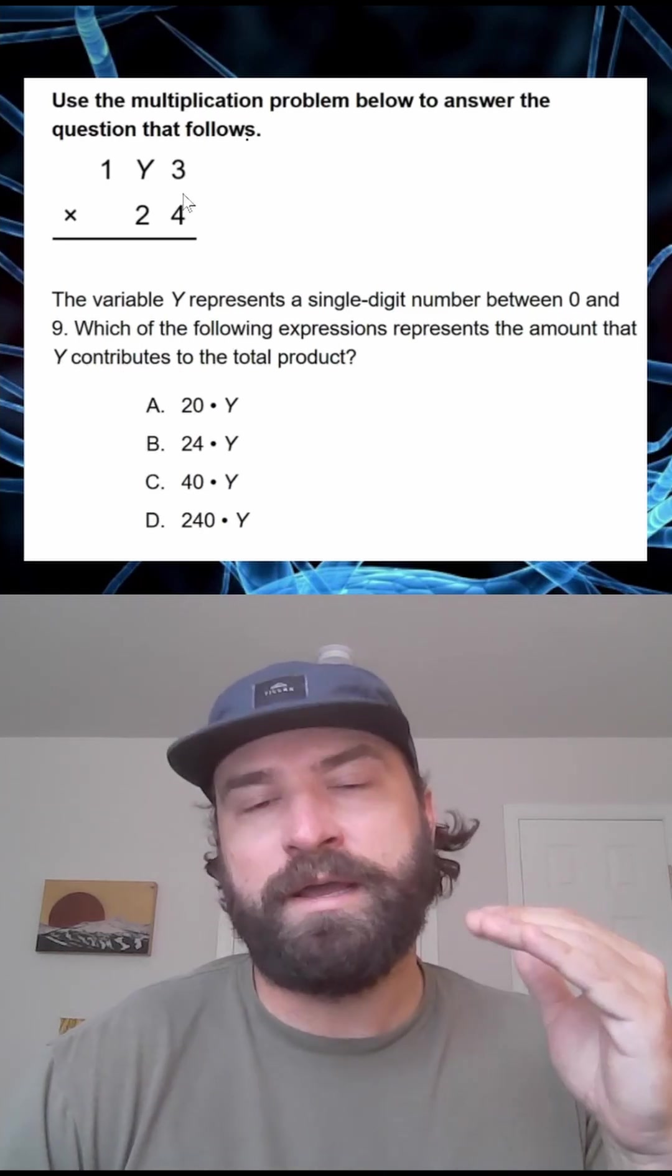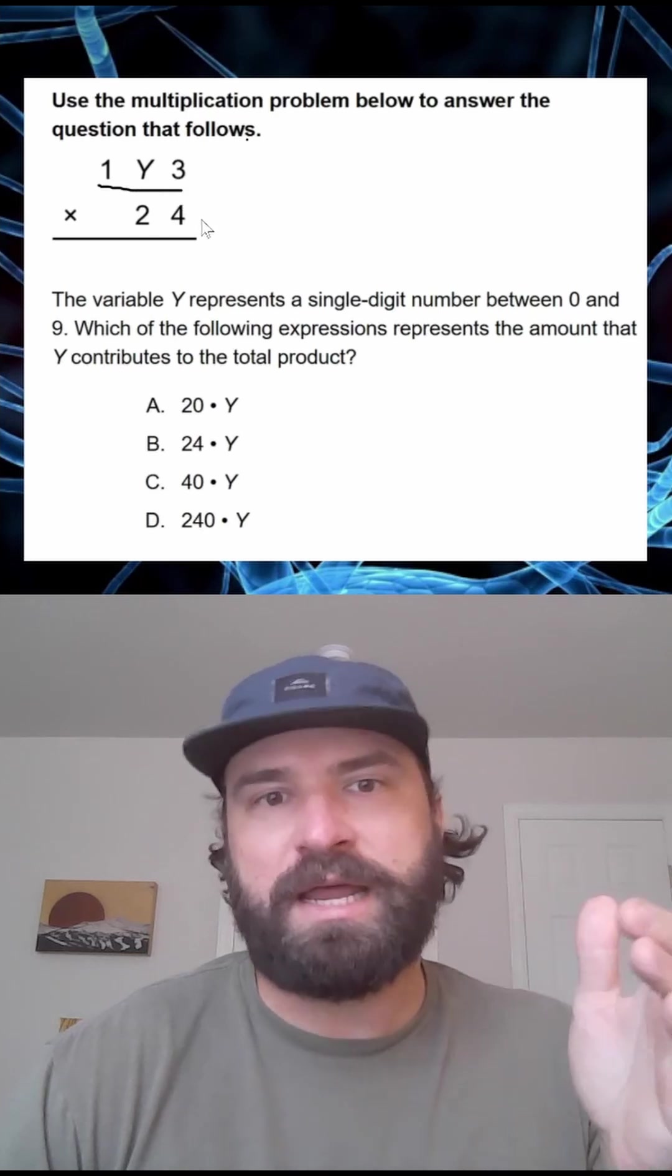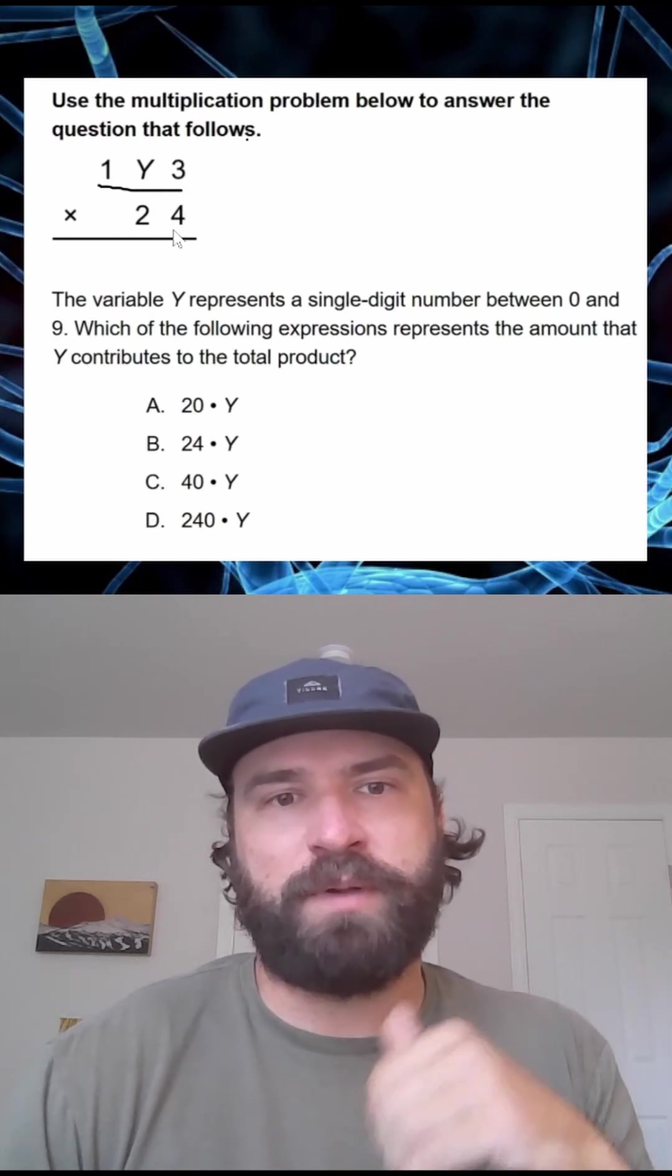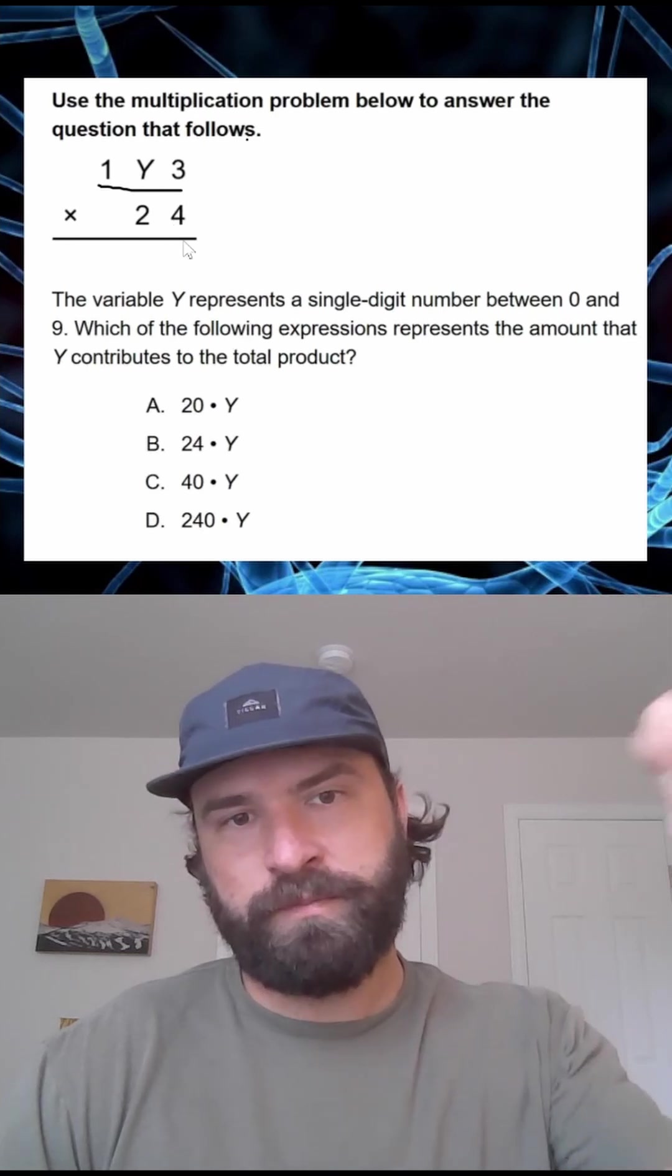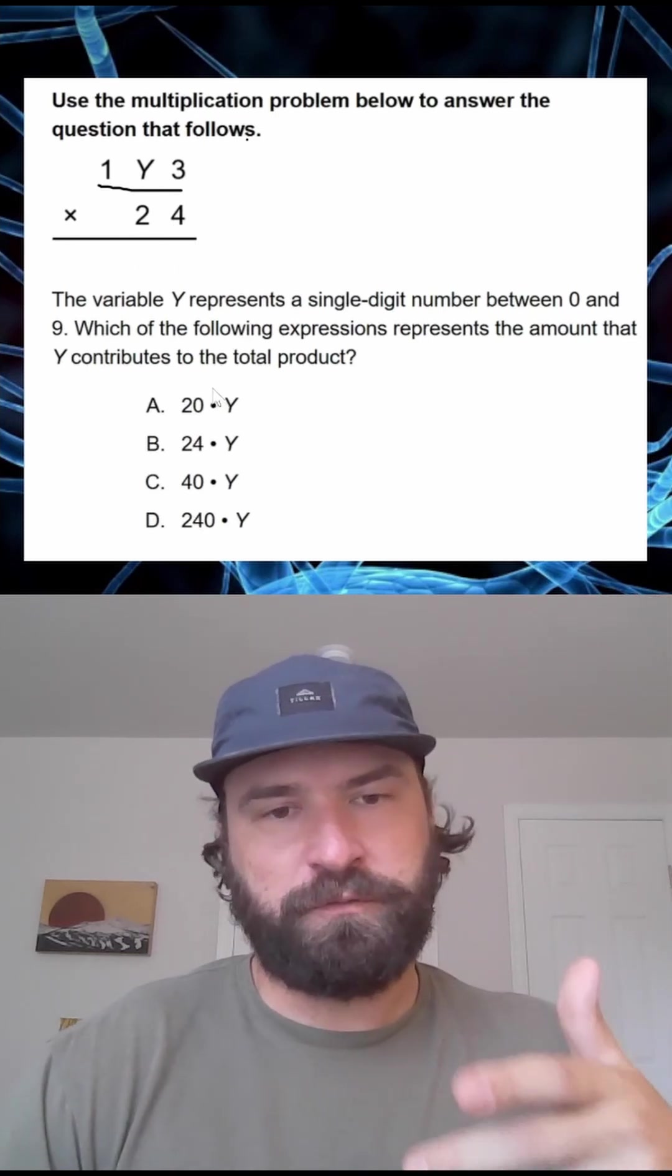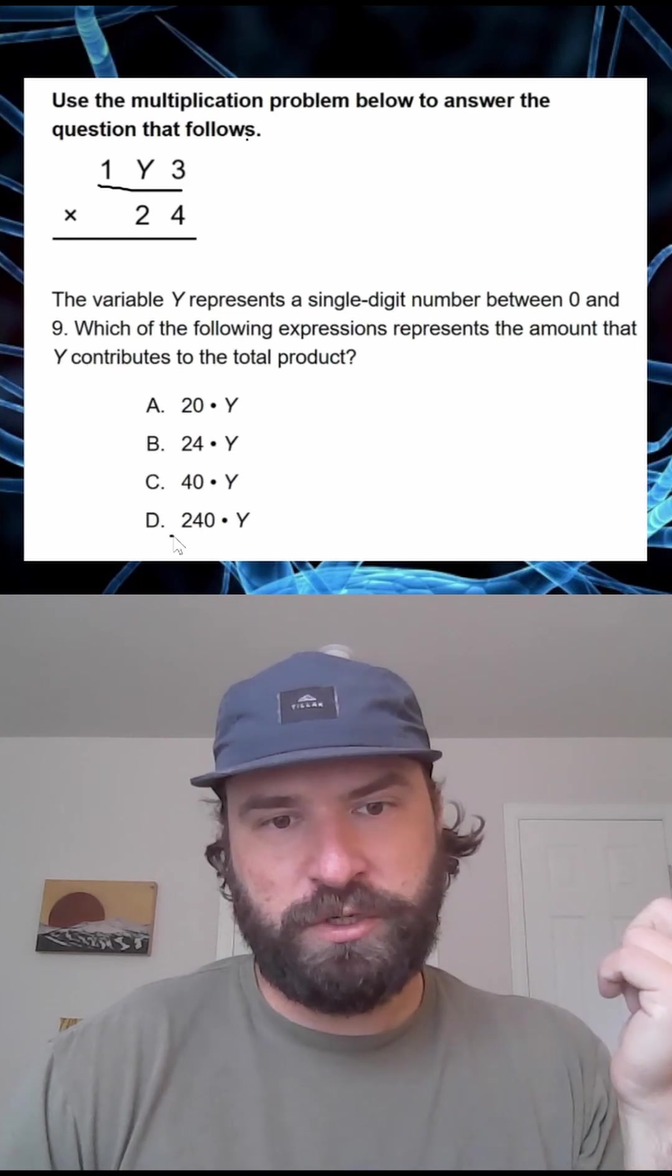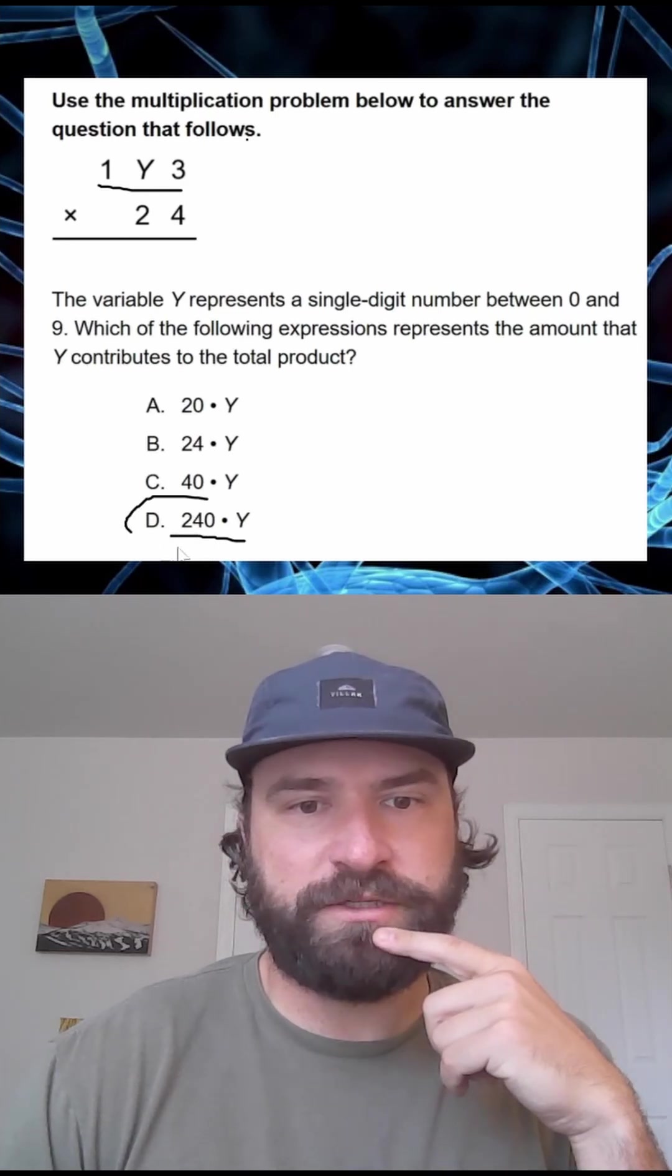So when we increase y by 1, we're increasing this number by 10. And then that's being multiplied by 24. So when you increase y by 1, you're multiplying 24 by 10, which is 240. So it's going to be 240 times y is what contributes to the total product. So our answer is D.